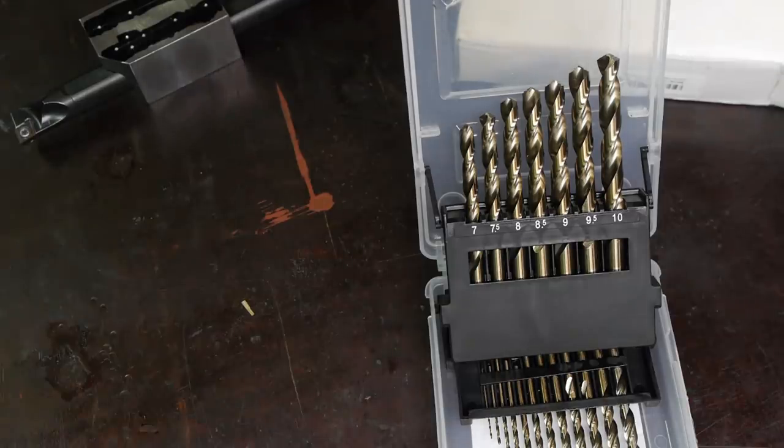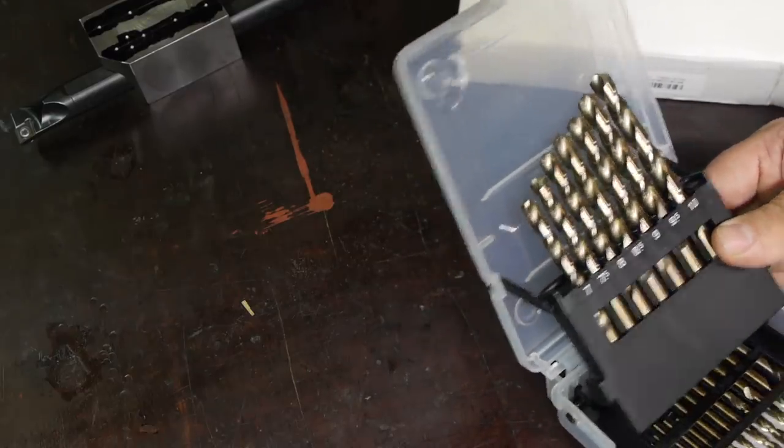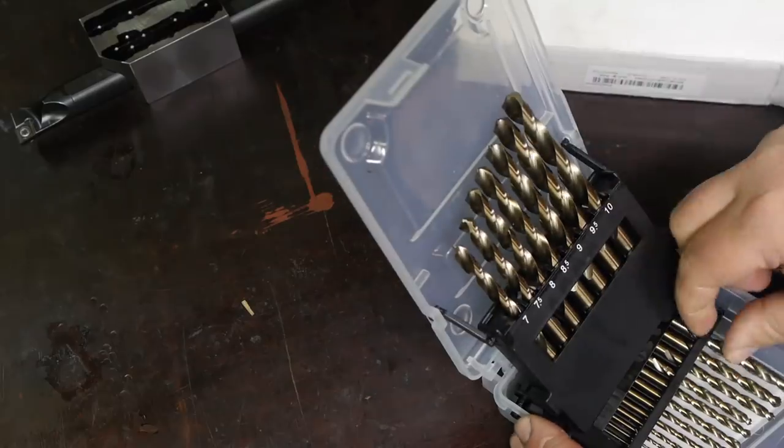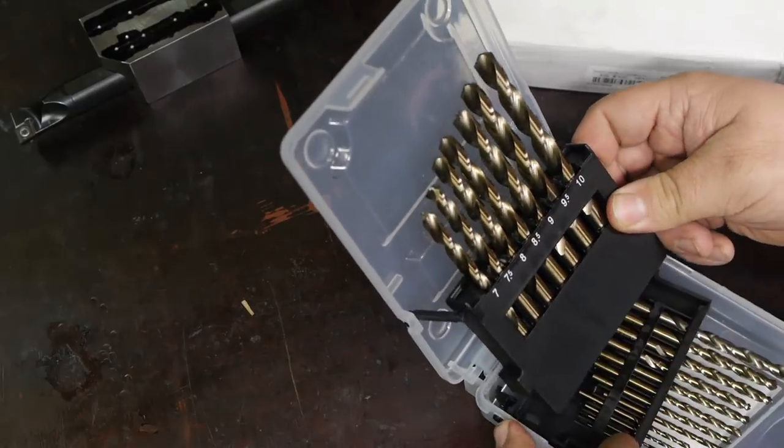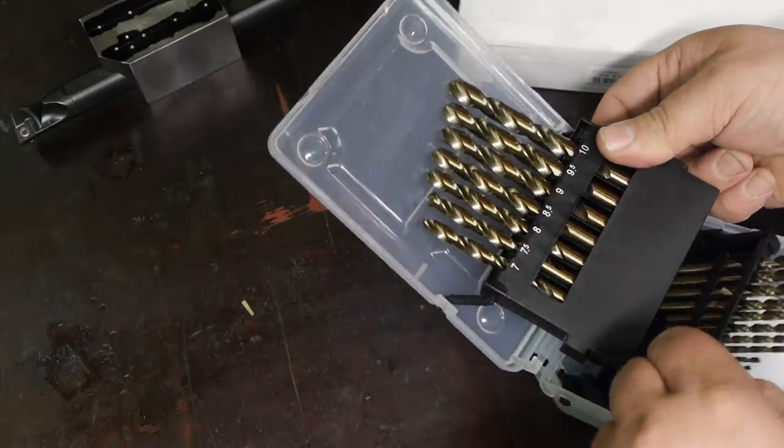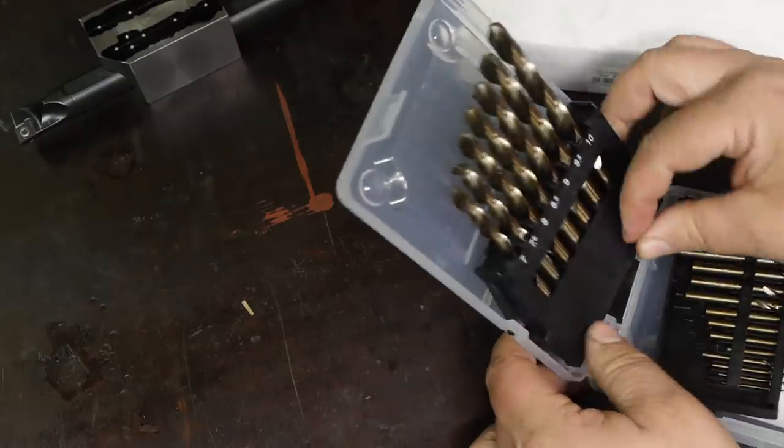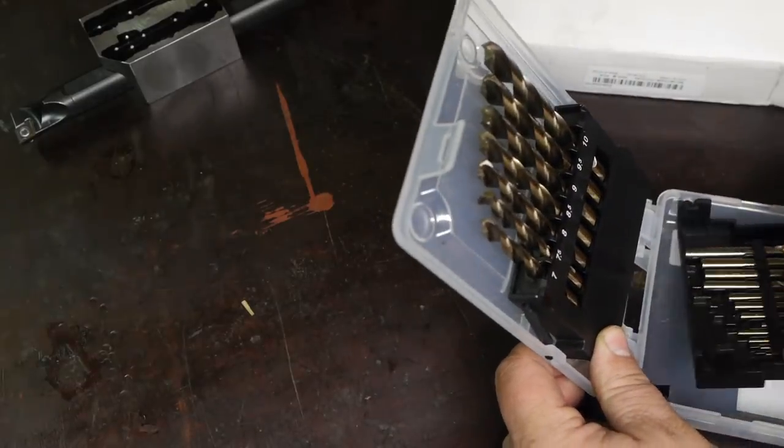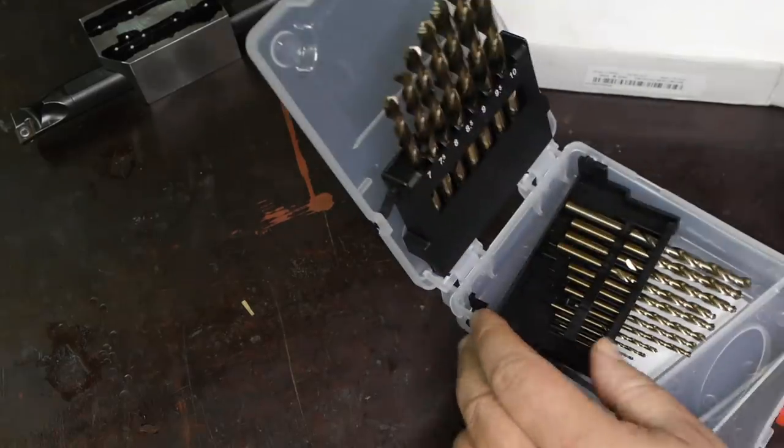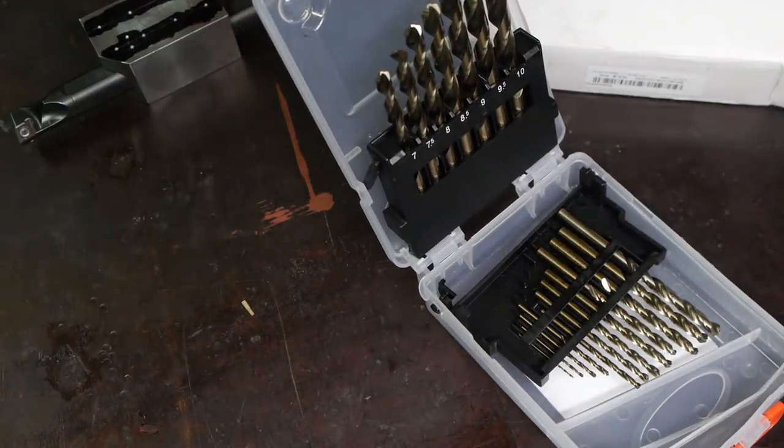I'm not sure about this plastic drill index. It seems to be already broken. Yeah, a piece of the hinge broke off. It's pretty useless. Let's put these in an old metal drill index.